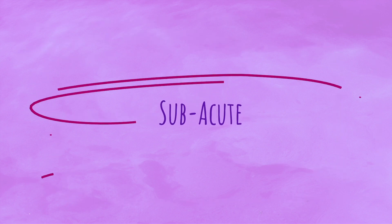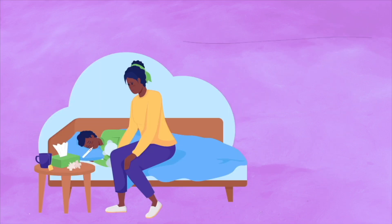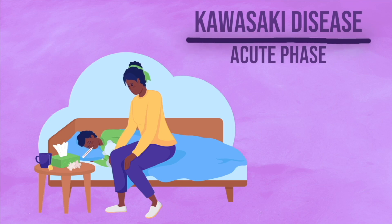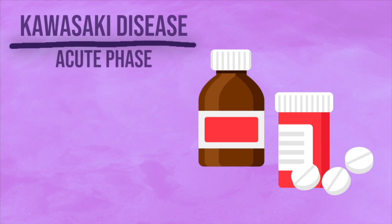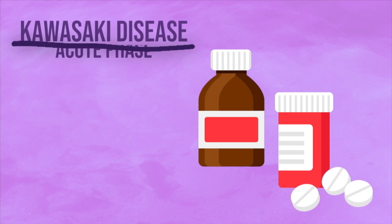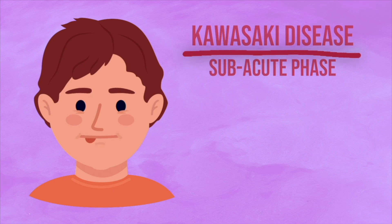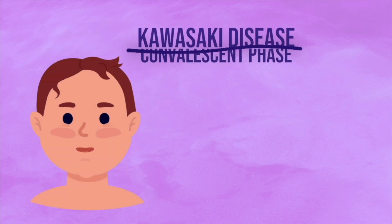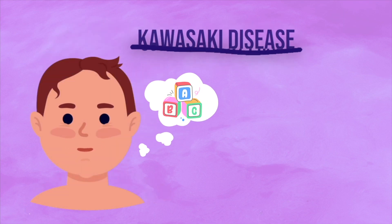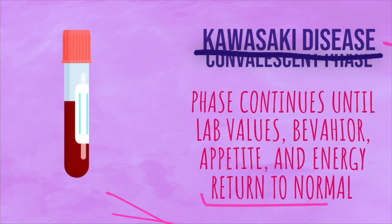There are three stages of Kawasaki disease: acute, subacute, and convalescent, and symptoms may vary depending on the disease stage the child is in. In the acute phase, the child may have a high fever that doesn't respond to antibiotics or antipyretics, and may begin to exhibit irritability. In the subacute phase, the child's fever may resolve but irritability continues, and the child is at the greatest risk for aneurysms. In the convalescent phase, the child's symptoms are gone, but they remain in this phase until their energy and appetite are restored and their lab values and behavior return to baseline.